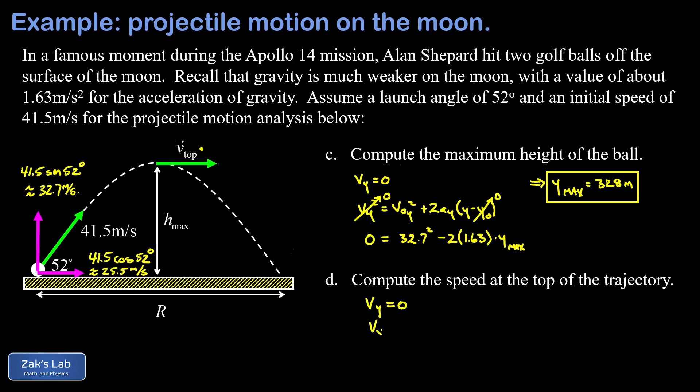I also know that V_x, the x component of the velocity never changes. So V_x equals V naught x. That means this velocity at the top of the trajectory, the total velocity, is just equal to the initial x velocity. I showed that as a vector to indicate it still has the initial rightward direction. What we were actually asked in part D was just for the speed, so we don't have to worry about the direction. The speed at the top of the trajectory is just equal to the magnitude of our initial x velocity, and that's 25.5 meters per second.